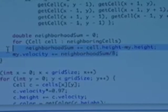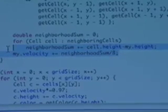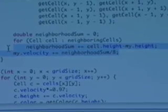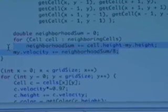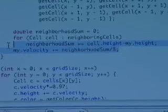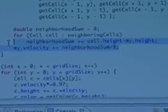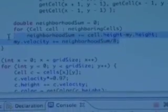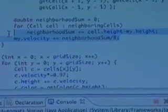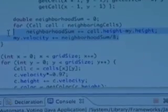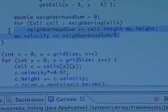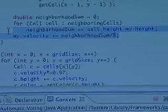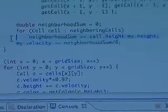If everybody around you is very varied, you may have a very low velocity. Yeah, so if you're very different than the people around you, then your velocity is going to be higher. Right. So let's run it and see what happens.